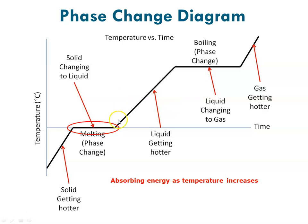At that point, it continues to absorb energy, only now it's a liquid, and as it absorbs energy, its temperature goes up. Just like if you were in a really cold place and you had ice at negative 50 degrees — when it reaches zero, where ice melts and turns to water, it would stay at zero. Then if you continued to add heat to it, the temperature would go up, increasing until the liquid reaches its boiling point. For water, that's 100 degrees C.